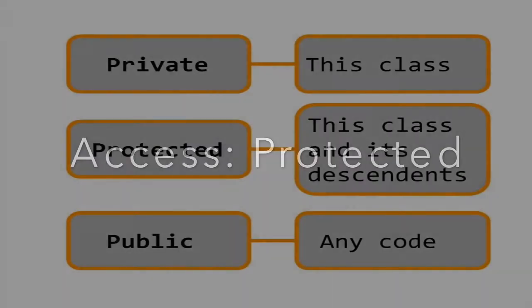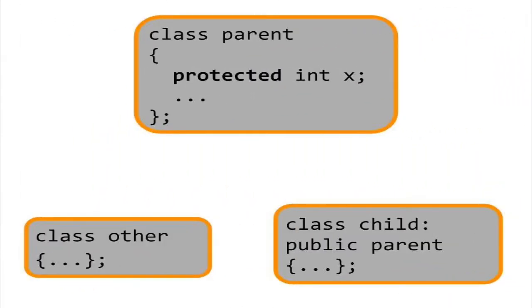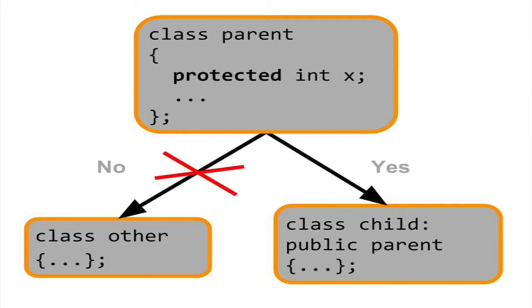In the previous video, we looked at three kinds of access specifiers in C++: Private, Public, and Protected. Remember that private data members are only accessible to the class that contains these members. By contrast, public data members are accessible from outside the class. Protected is like Private Plus.